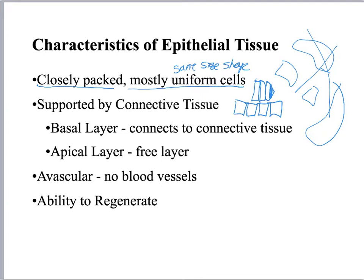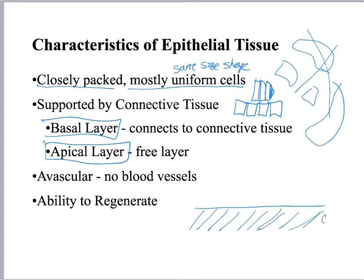Really important: apical layer and basal layer. I'm going to have a membrane down here and this is actually going to be connective tissue. That's always there, always always always. We're going to call this the basement membrane, and then I'm going to put my epithelial tissues on it.